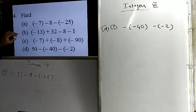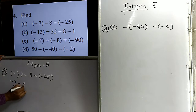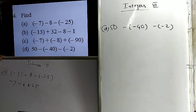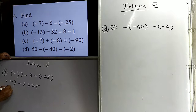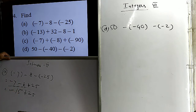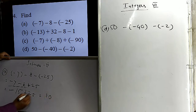Let us do problem A. Opening the brackets: minus 7 has no problem, minus 8 has no problem, but there is a minus sign outside the third bracket, so we change the sign inside — it becomes plus 25. Now we add the like-sign terms: minus 7 and minus 18 give minus 15. Then minus 15 and plus 25 have unlike signs, so we subtract: 25 minus 15 equals 10. Since plus 25 has the larger magnitude, the answer is plus 10.